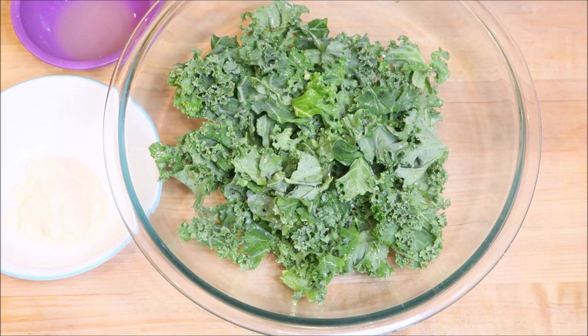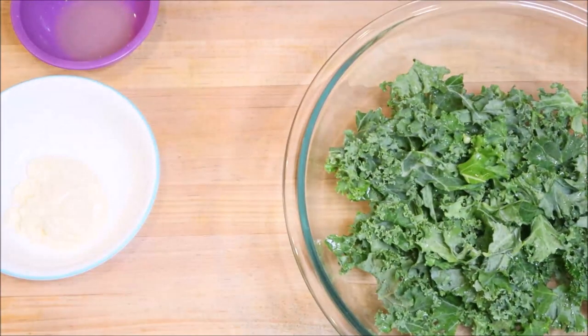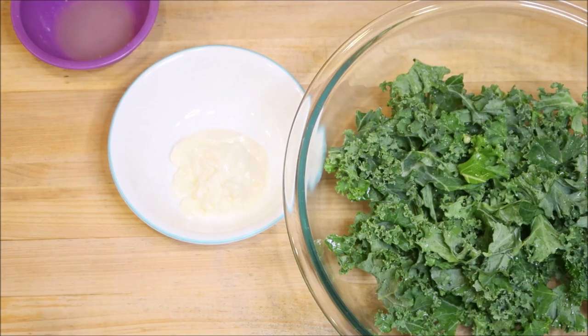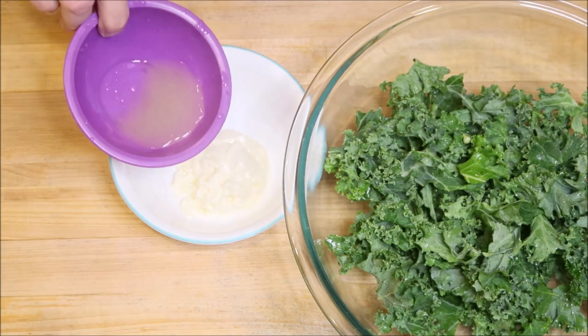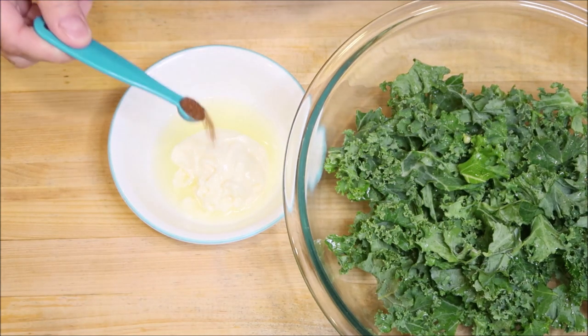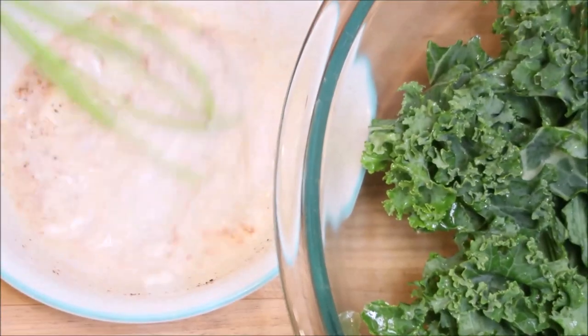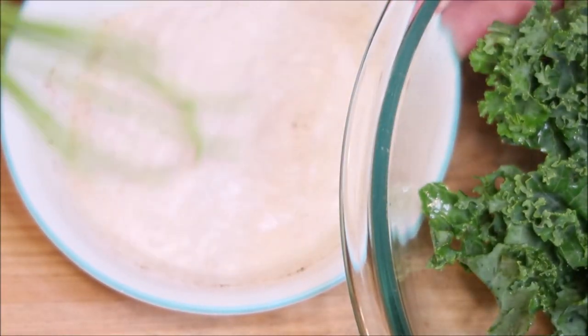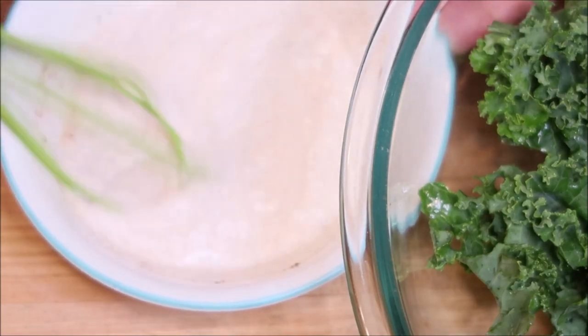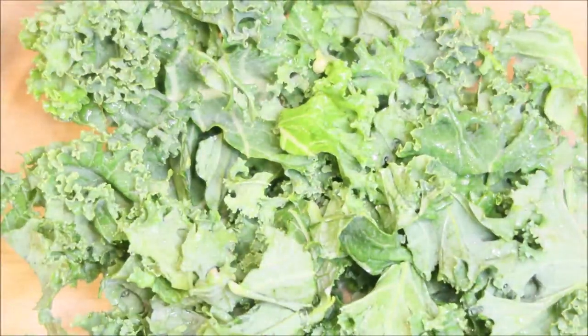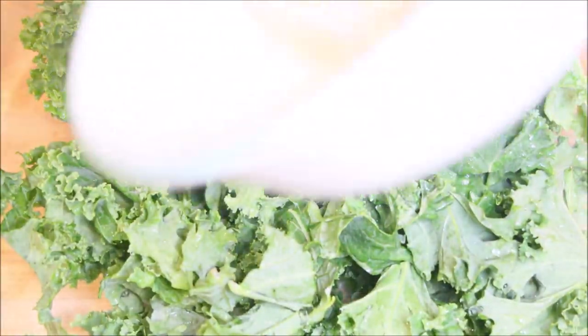The kale is all clean, so we're going to push that aside for a second. In here we have a quarter cup of avocado mayo, two teaspoons of lime juice, and a quarter teaspoon of chili powder. Once that's all whisked, we're going to add it into our kale and give that a stir.